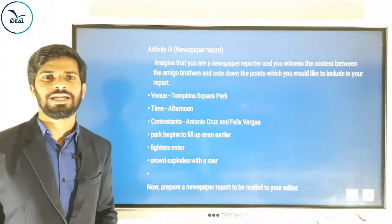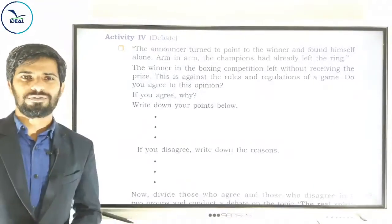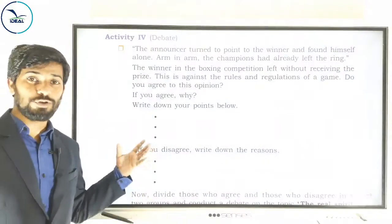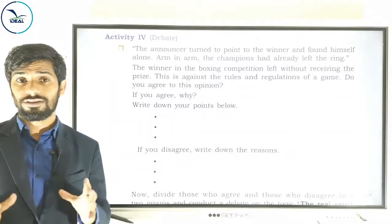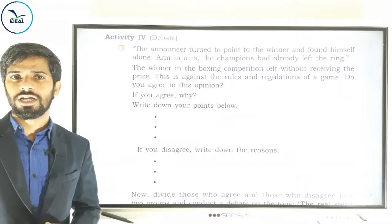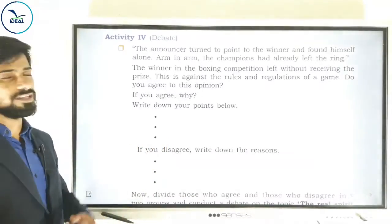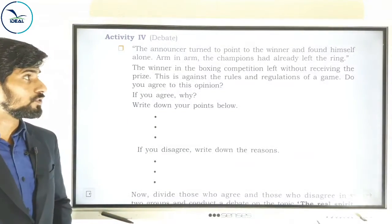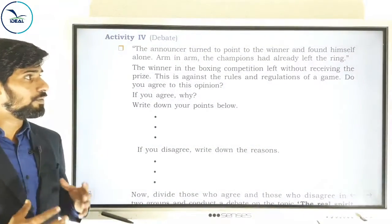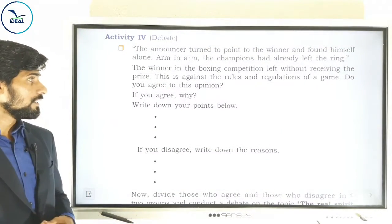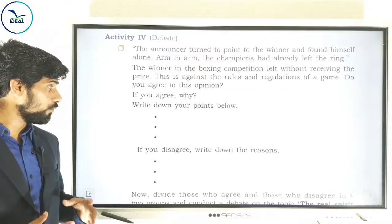Activity four is debate. If we were in a normal classroom we could have conducted a debate, but we can't do that now. Anyhow, you need to understand what things are involved in a debate and how you will be asked to answer questions on this in your examination. Look at the question: the announcer turned to point to the winner and found himself alone — arm in arm, the champions had already left the ring. The winner in the boxing competition left without receiving the prize. This is against the rules and regulations of a game — do you agree? Write your points below.